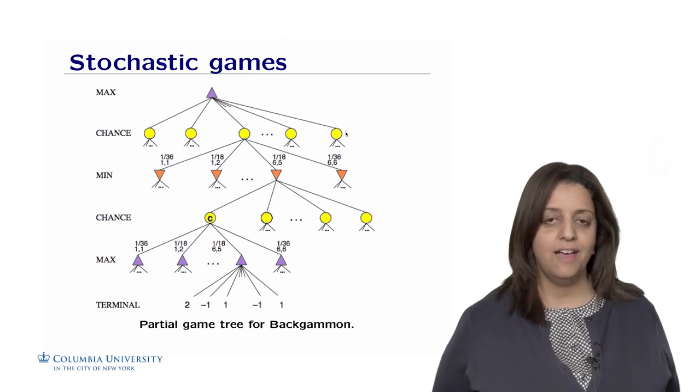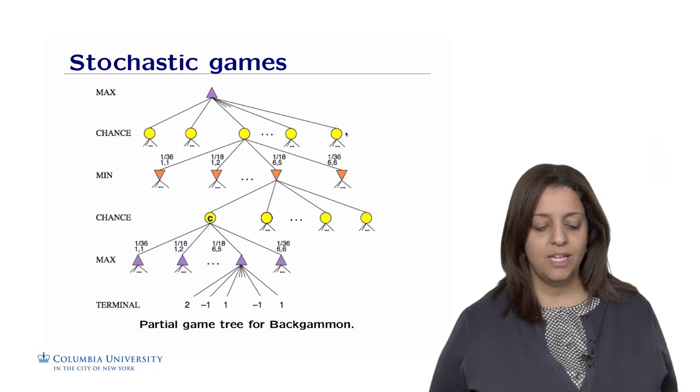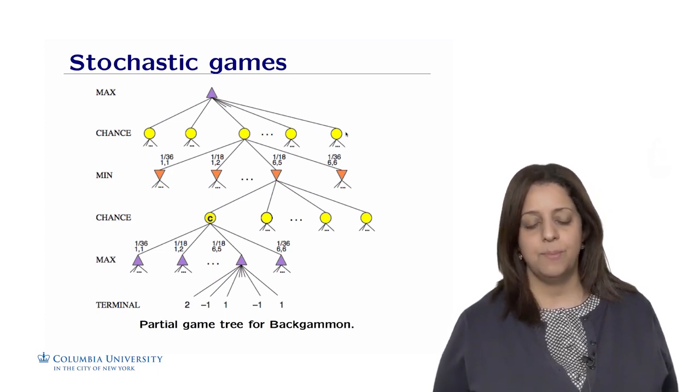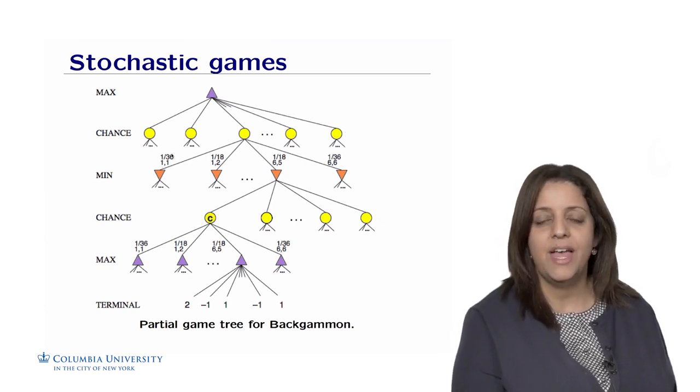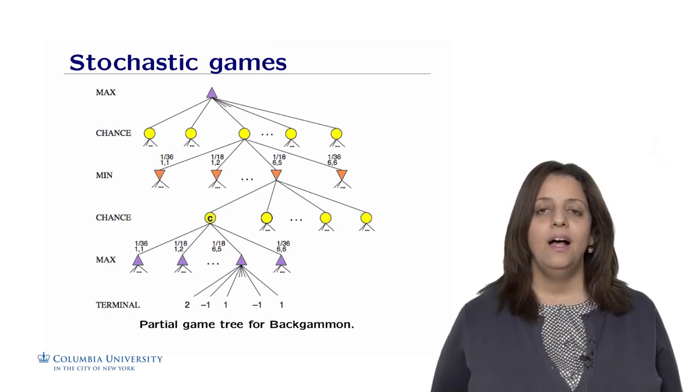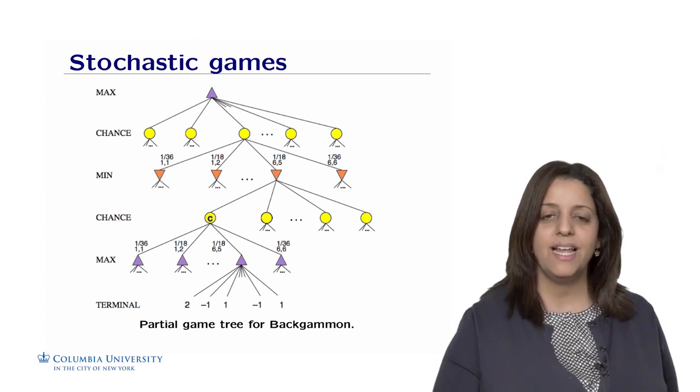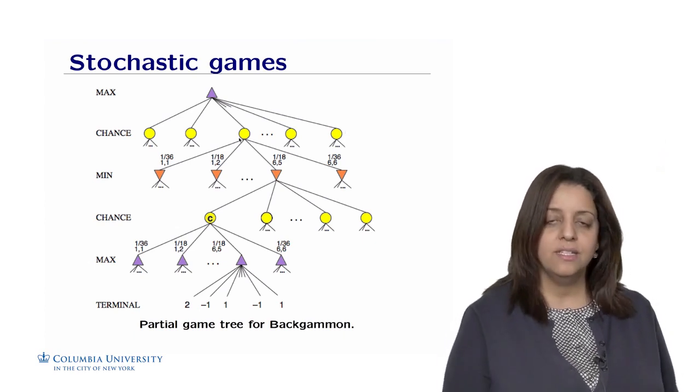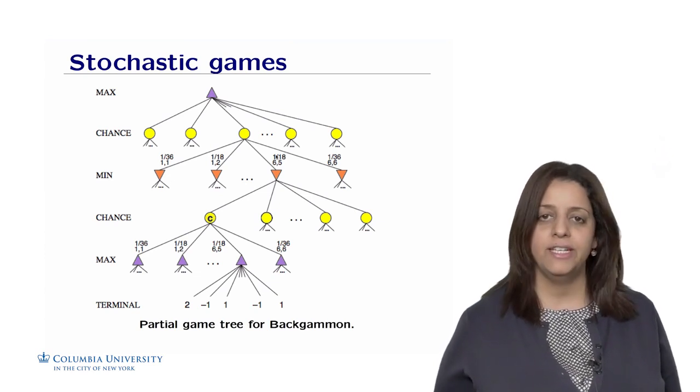In the case of backgammon, we are rolling two dice, which means each number on the die occurs with some probability. We could have 1,1 occurring with a probability of 1 over 36. So we have six spaces on each of the die. The search space is no longer max and min playing just by themselves. There will be an element of chance in the middle that is symbolized by the yellow circles.